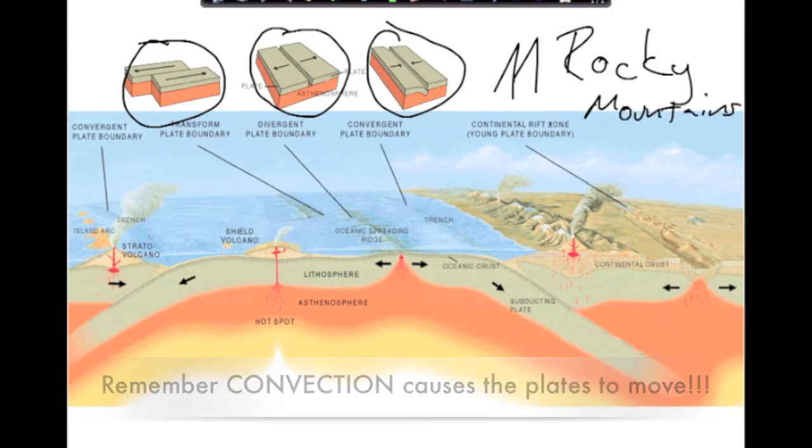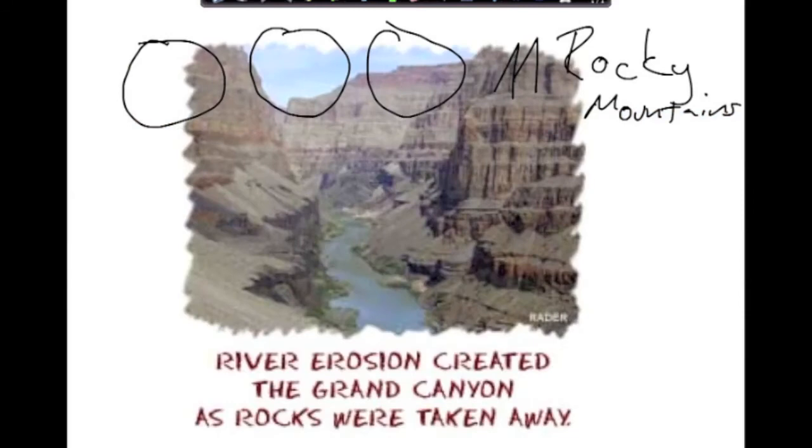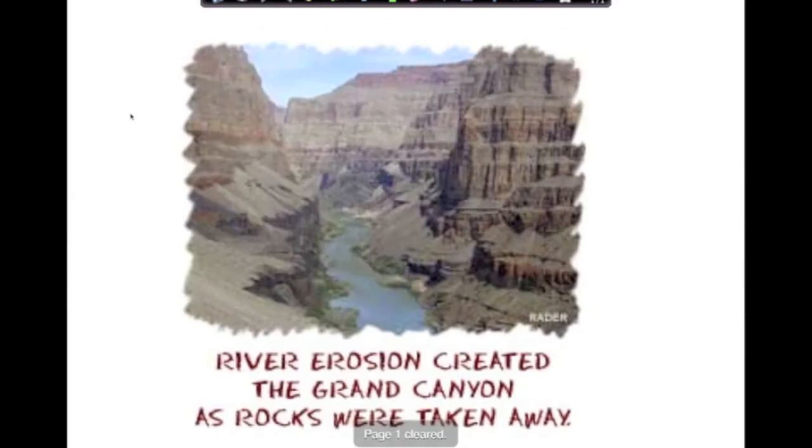External processes. These are processes that occur on the surface of the Earth. And these are weathering, soil building, and erosion. As far as external, this is our first type of external, and this is erosion.